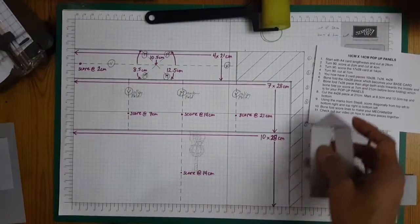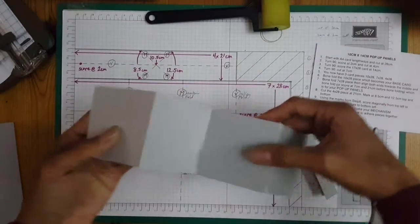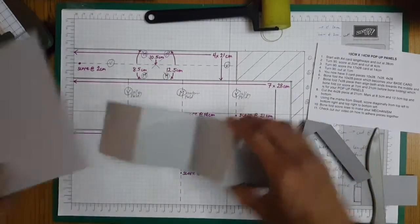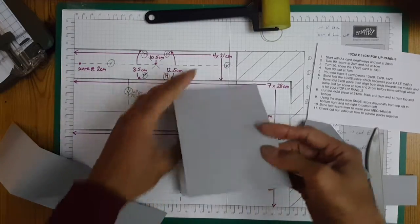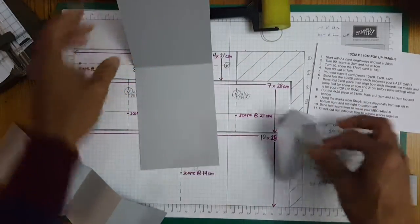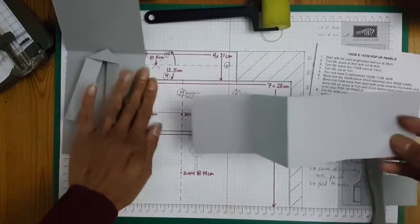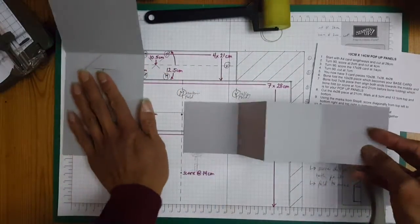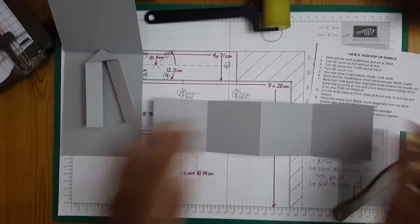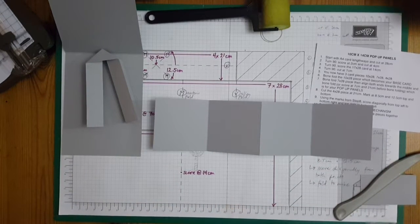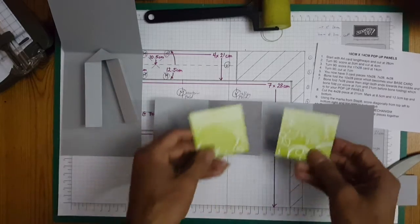I've gone ahead and prepared some of the DSPs and die cutting. But we're going to decorate the panels first before I continue constructing the pop-up panel card. So we use the Irresistibly Floral DSP.